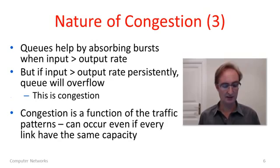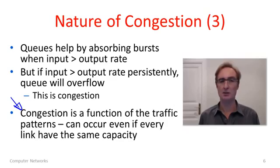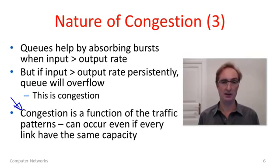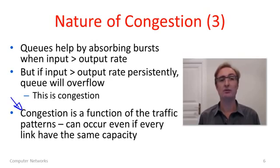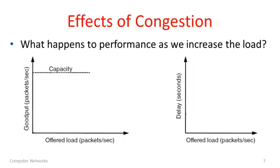There's no getting rid of congestion. You might imagine if we just made every link have the same capacity everything would be fine, but congestion is a function of traffic patterns. Even if all links have the same speed, we'll still need some buffering in routers — for instance, when three packets arrive rapidly and are going to a slow link. So congestion is unavoidable.